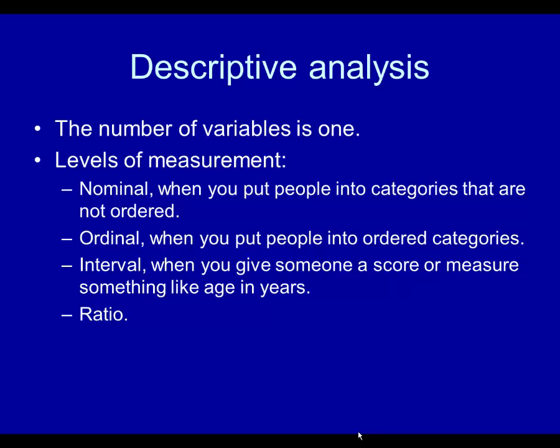Interval is when you give someone a score or measure something like age in years or height in inches or feet, or the score on a depression scale. Ratio level is the level that has a fixed zero point. I won't say anything more about it because it's not terribly relevant to descriptive analysis for what I'm going to be doing.